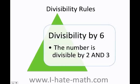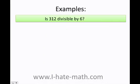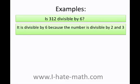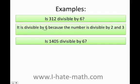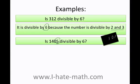Divisibility by 6: the number must be divisible by 2 and 3 at the same time. For example, 312 — we've seen that this number is divisible by both 2 and 3, therefore it's also divisible by 6. What about 1,405? I can already say no, because it must be divisible by 2 and 3 together, but the last digit is 5, which is not even, so it's not divisible by 2.